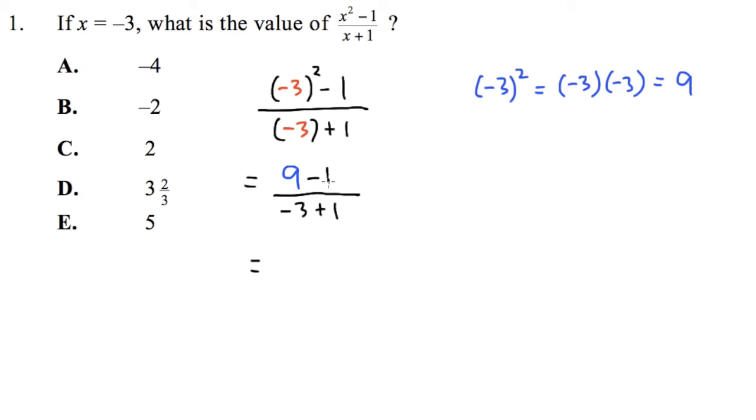Alright, now we have to work out the top. 9 minus 1 is 8, over negative 3 plus 1 is negative 2. And then at the end, we see that positive 8 divided by negative 2. The result is going to be negative, and then we will have 8 divided by 2, which is 4.